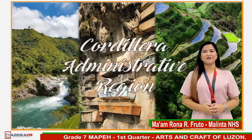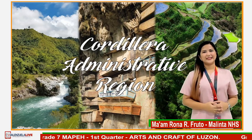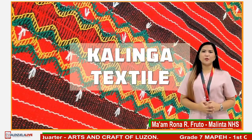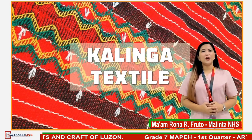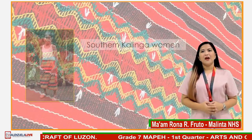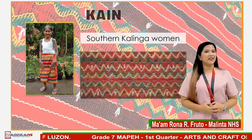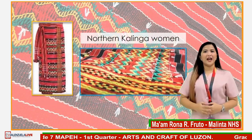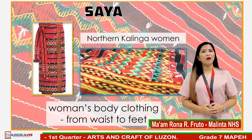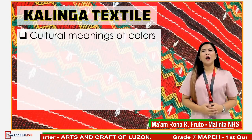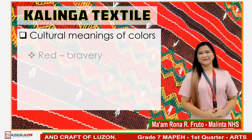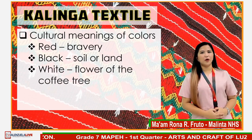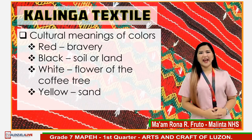Let's proceed to the arts and crafts of Cordillera Administrative Region. Kalinga are skilled weavers. One of their finest products is textile which are mostly red stripes with white, yellow, and black geometric patterns. This is an example of Southern Kalinga textile called kain, a wrap-around skirt or tapis. For Northern Kalinga, it is called saya, a woman's body clothing covering waist to feet. The colors of their textile have cultural meanings: red for bravery, black for soil or land, white for flower of the kofi trees, yellow for sand, and green for mountains.